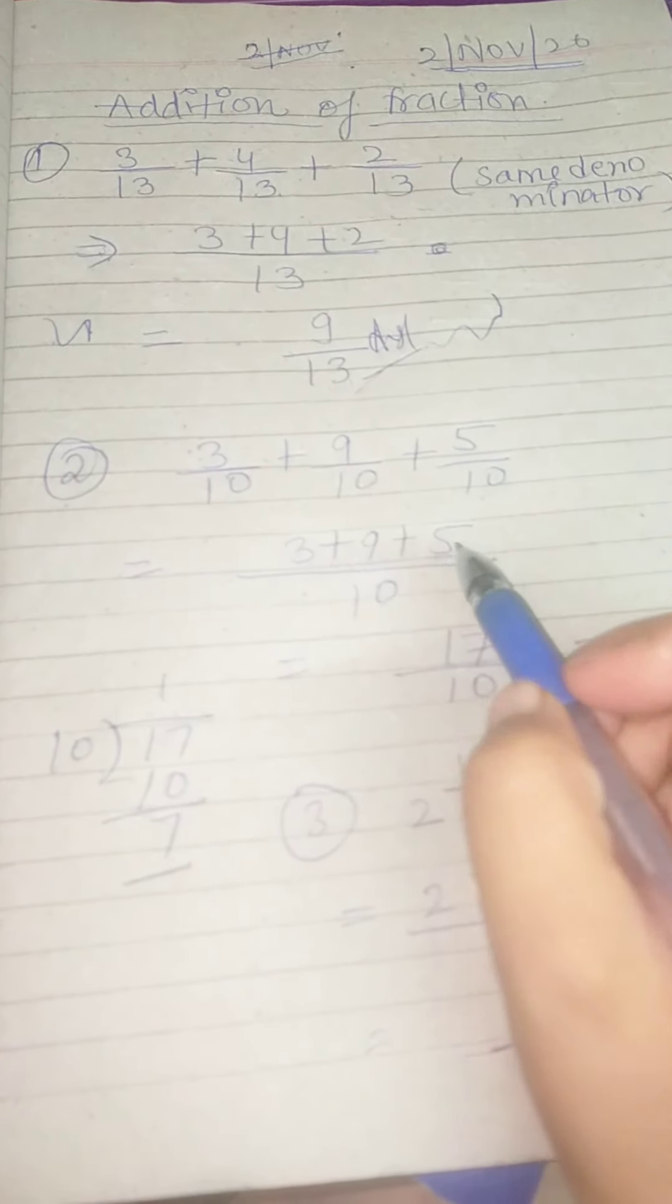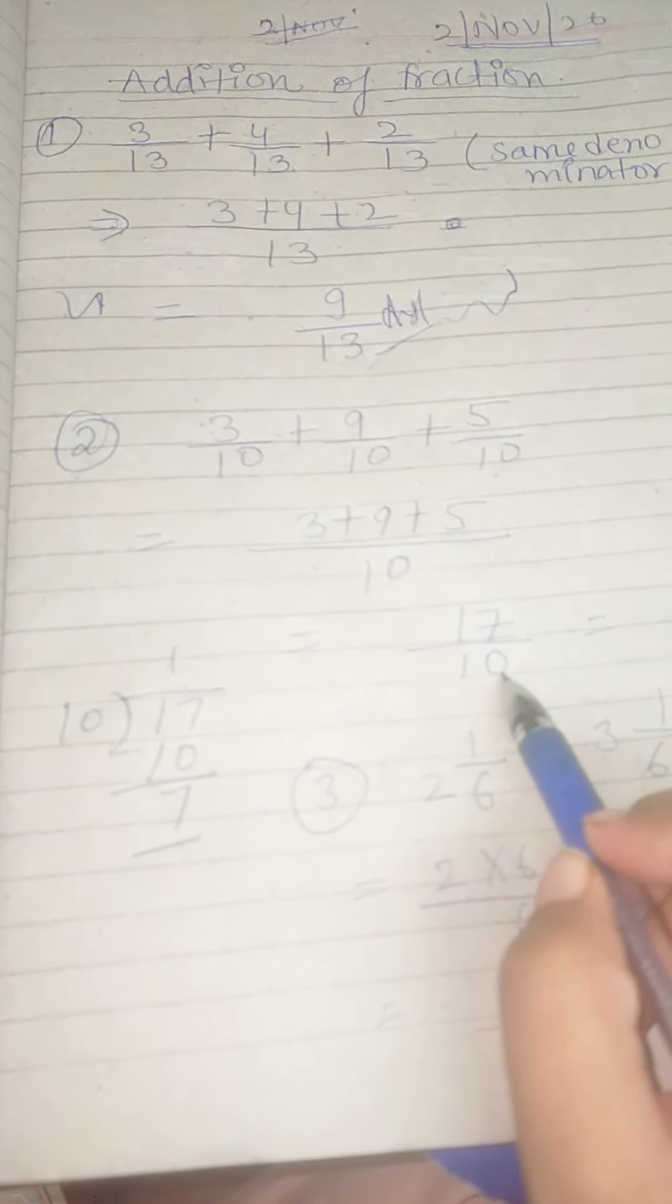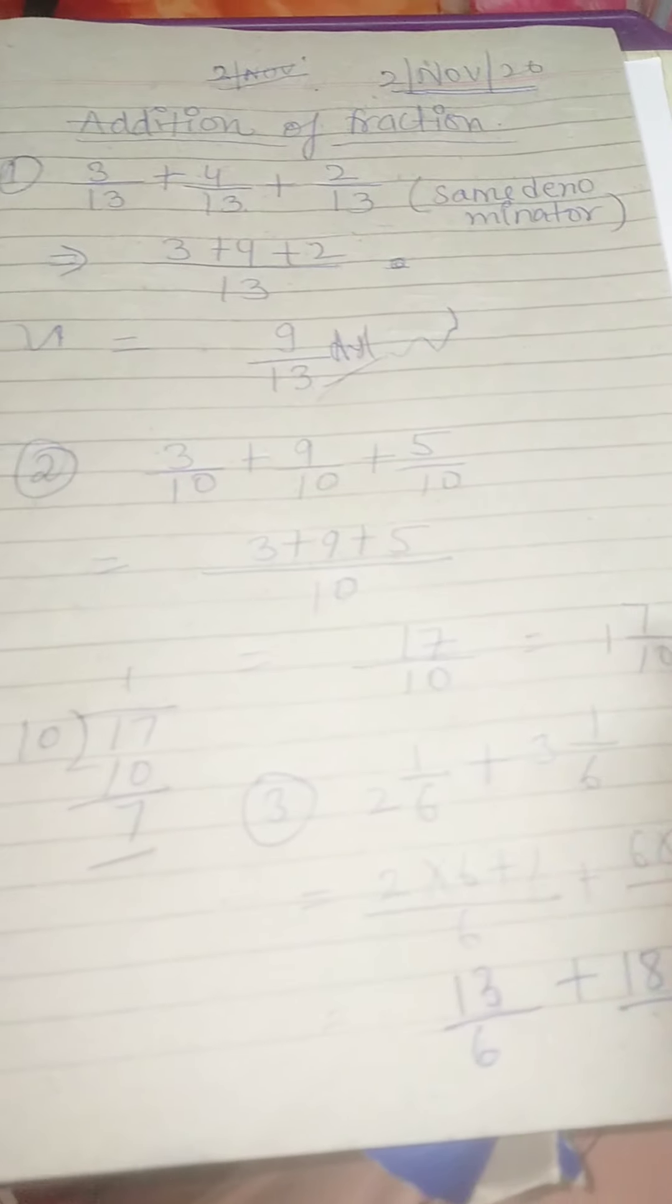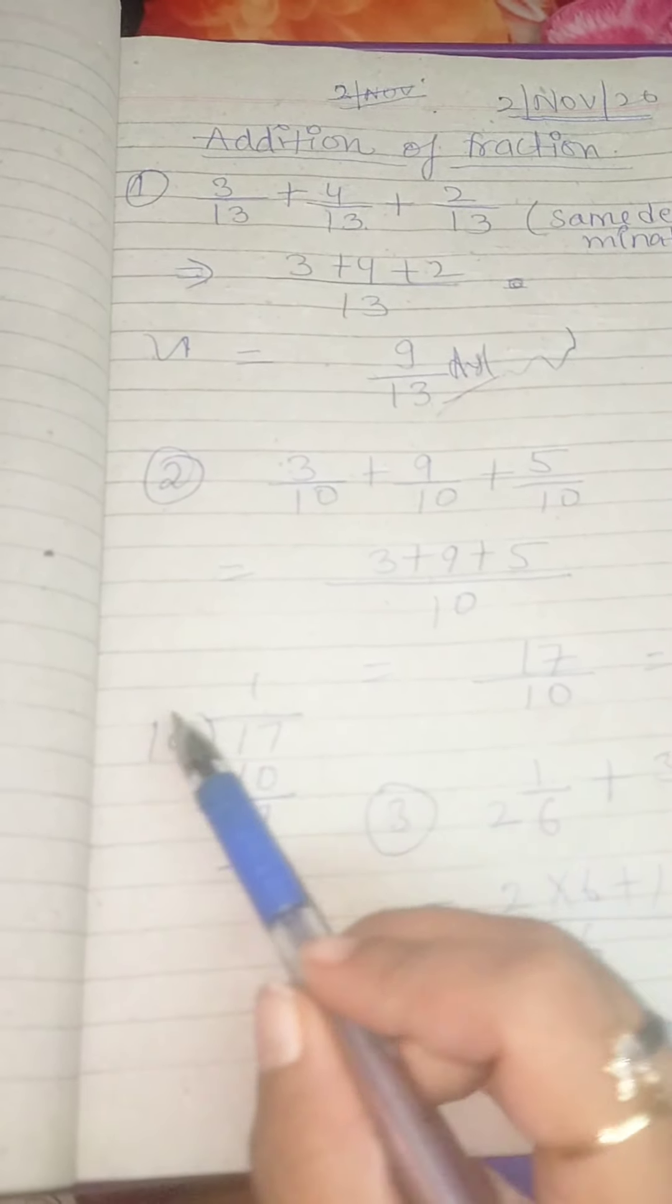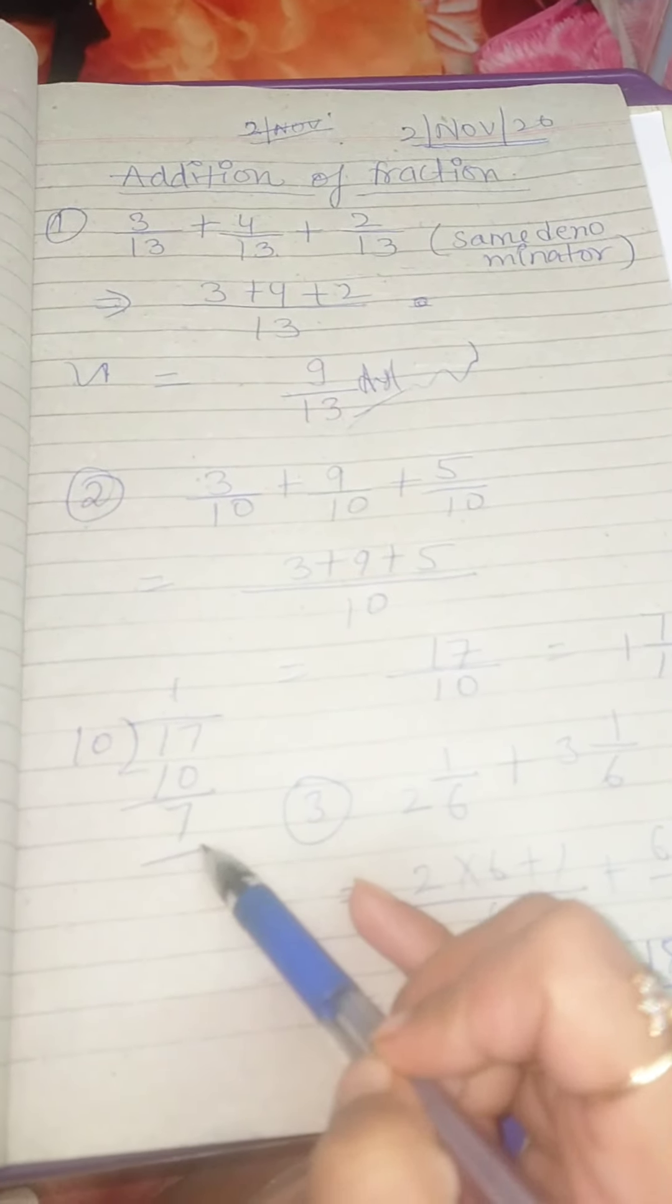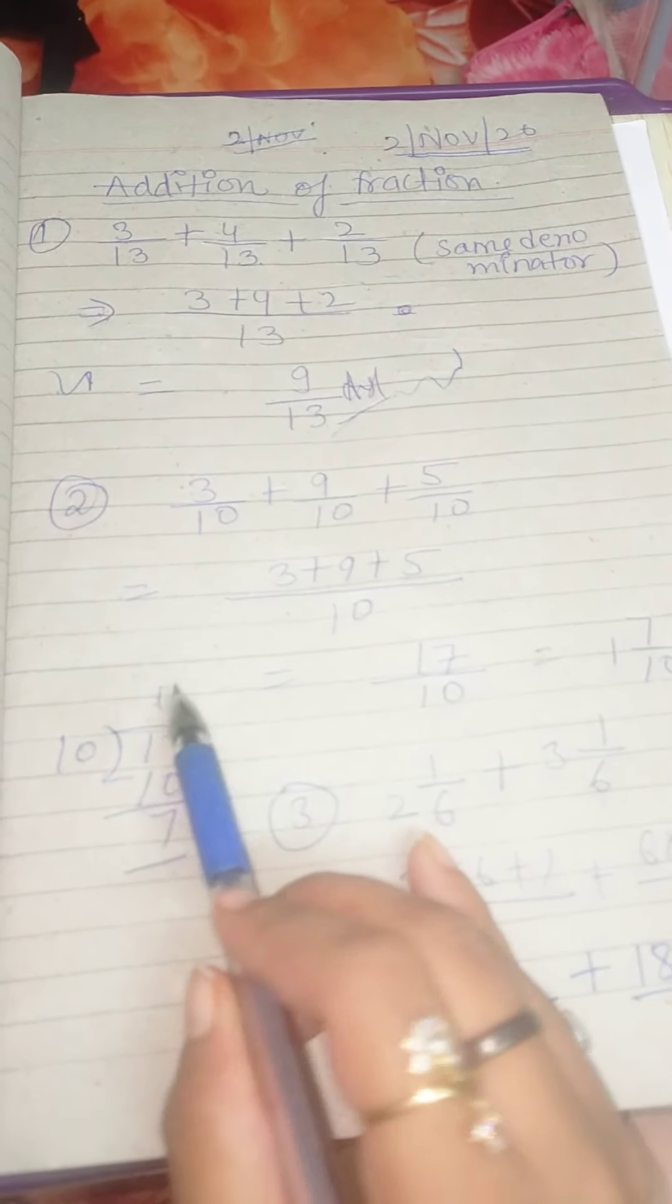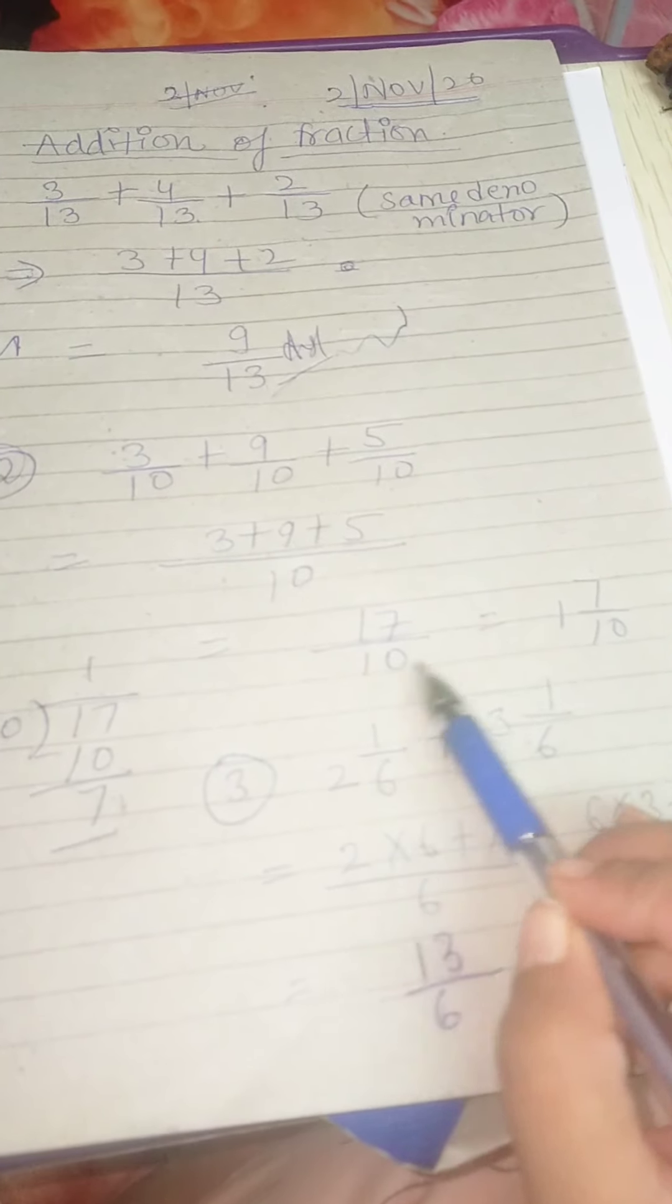3 plus 9 plus 5 will be 17 by 10. When the numerator is bigger and denominator is smaller, you can convert it into mixed fraction. How to do it? See, divide 17 by 10. 10 ones are 10. The remainder 7 goes on top, divisor goes on the side, denominator stays 10. So it is now 1 and 7 by 10.